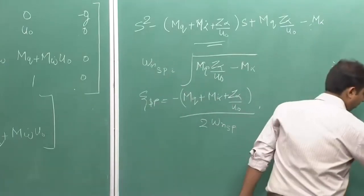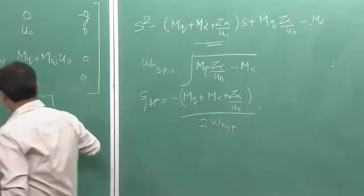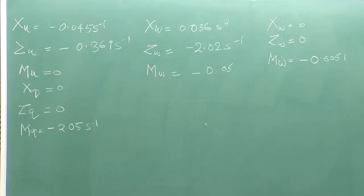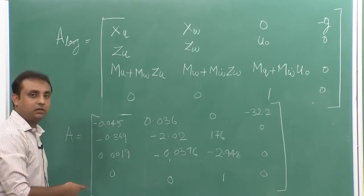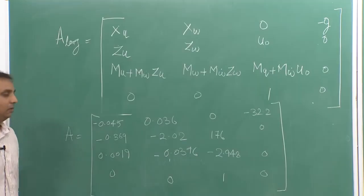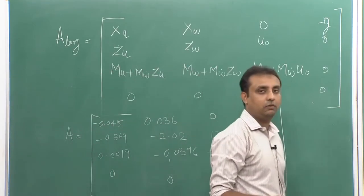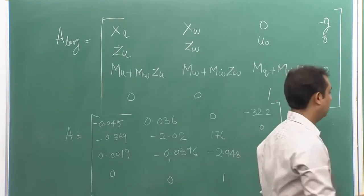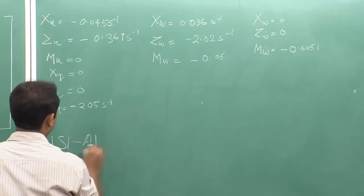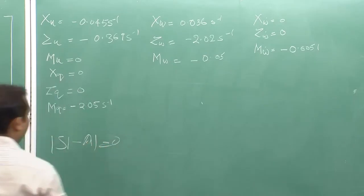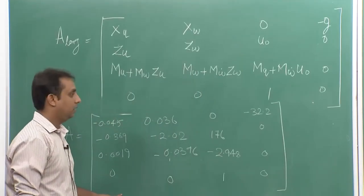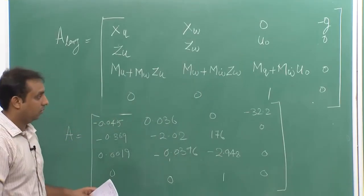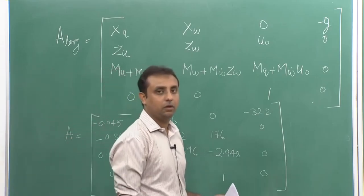Let us take a numerical on longitudinal mode. Using the given longitudinal derivatives, you can directly substitute these variables in the equation and you will reach the longitudinal matrix. The characteristic equation of this longitudinal matrix will be derived from the formula sI minus A equals 0, where A is the longitudinal matrix. Since this is a 4×4 matrix, the characteristic equation will be of the fourth order.